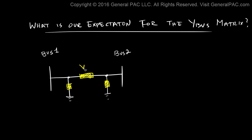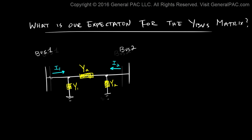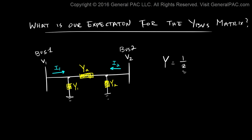Similar to the example above, we have an admittance modeling the transmission line, which we'll call YA, plus line charging capacitance or shunt admittances on each side, Y1 and Y2. We then define current I1 flowing into bus 1 and current I2 flowing out at bus 2 — note they are in opposite directions. We also define voltages V1 at bus 1 and V2 at bus 2. Remember that admittance Y equals 1 over Z.